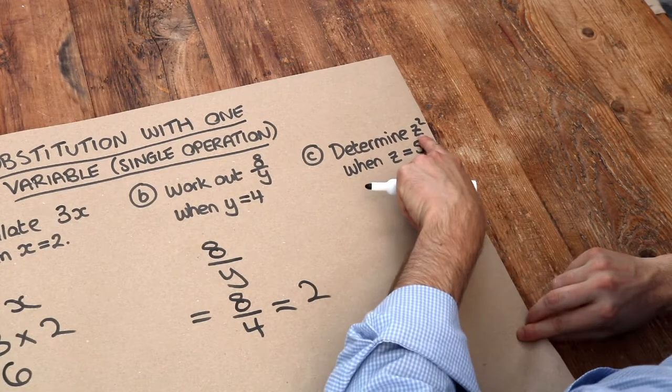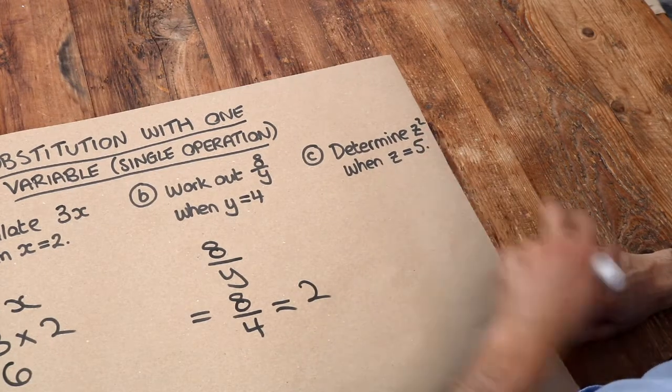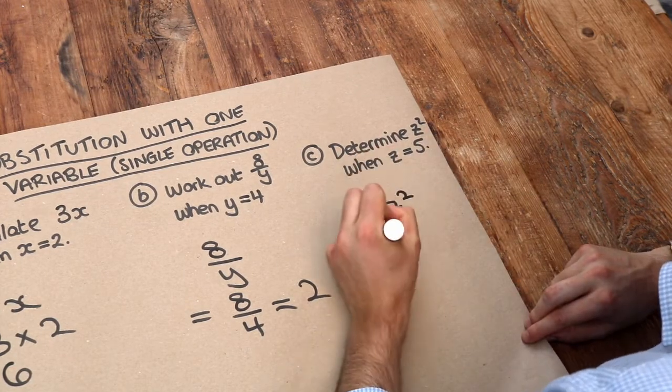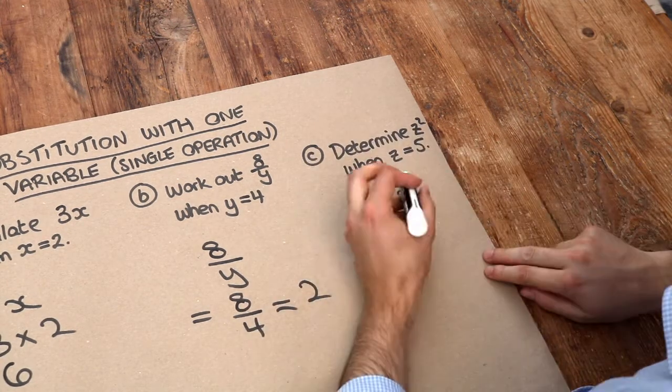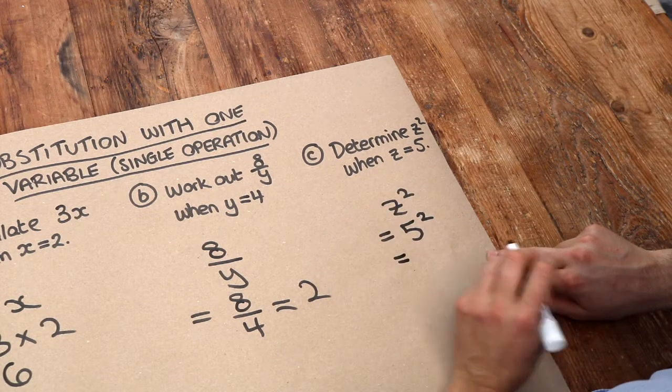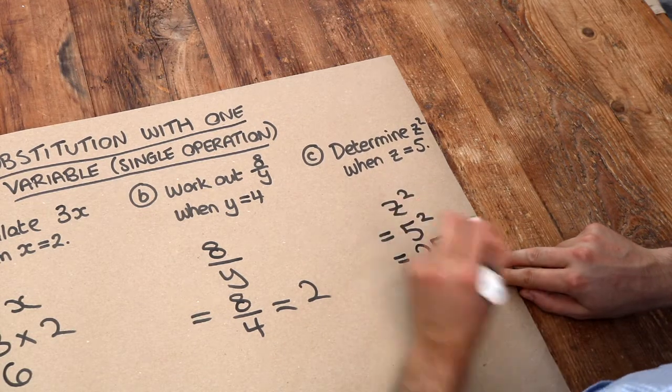And then finally determine when z is squared when z is 5. So if we have z squared, we replace, we substitute the z with its value which is 5. 5 squared means 5 times 5 and that is 25.